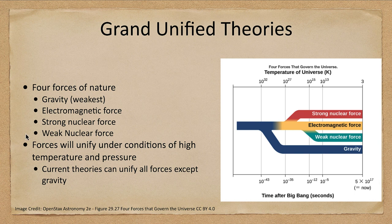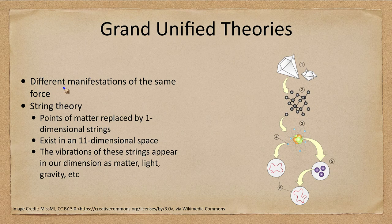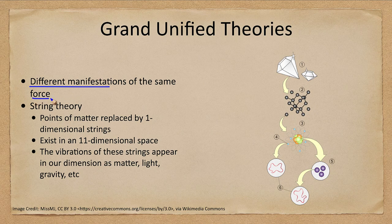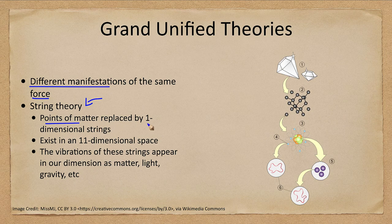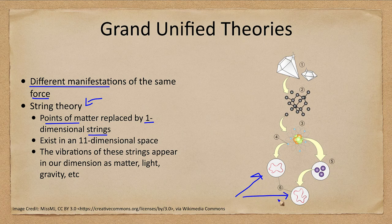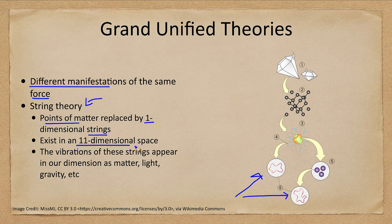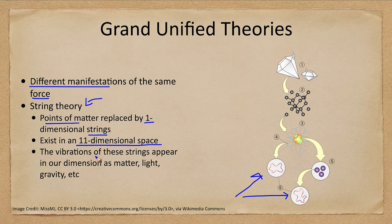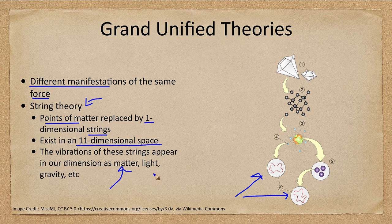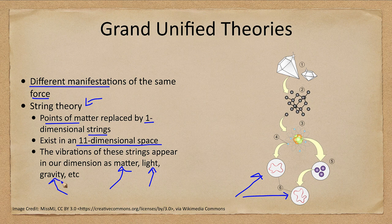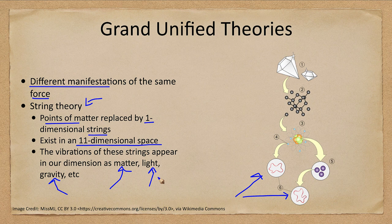What do we get when we unify these? We have what we call the grand unified theories, which looks at the forces as really just different manifestations of the same force. One way of thinking about this is string theory. String theory says that points of matter are instead replaced by one-dimensional strings. So the one-dimensional strings can become other things. They exist in an 11-dimensional space. We don't use all of them. We only see a few of those dimensions. They exist in a much higher dimensional space. The way these strings vibrate and move will mean that they could appear in our universe as matter or light or gravity. They make up everything in the universe so that everything is just a different manifestation of something else.